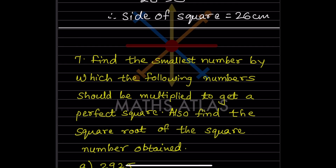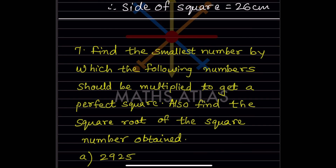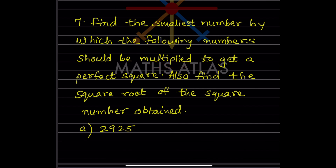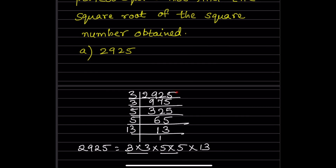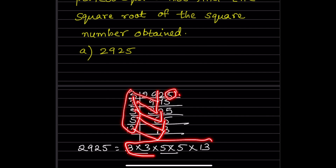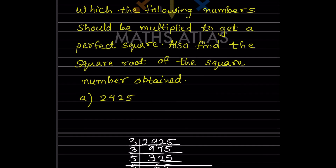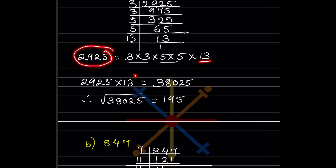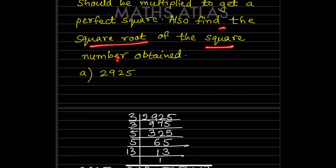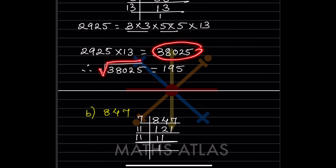Now find the smallest number by which the following numbers should be multiplied to get a perfect square, and also find the square root of the square number obtained. For 2925, we find the prime factors. It goes with 3, then 5. The factors show 13 is alone. So we multiply 2925 by 13 to get 38025. We then find the square root of 38025.